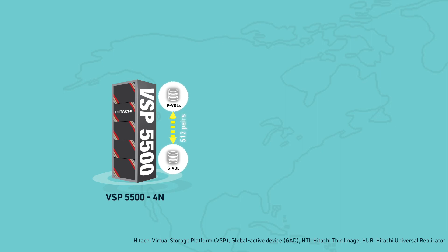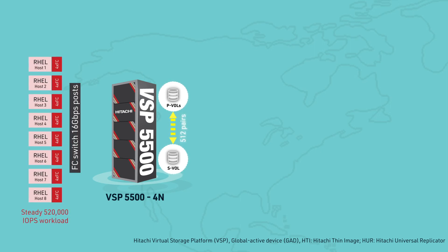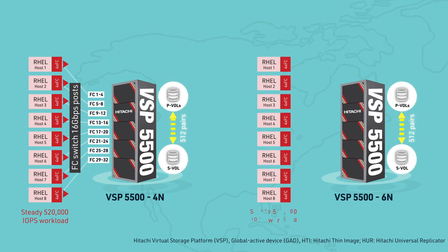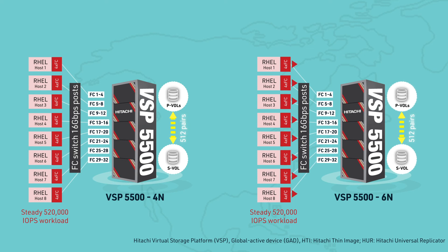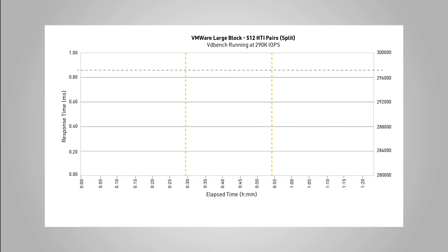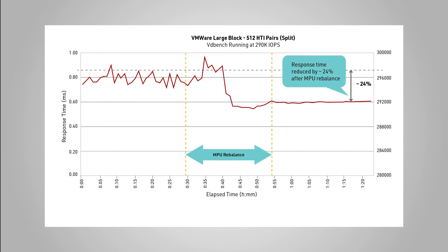To evaluate HTI, we upgraded a four-node VSP5500 model with HTI pairs to a six-node model. These pairs remained in split-state during the procedure. An application workload at a steady I/O rate of 520,000 IOPS was active while the upgrade was taking place. After we completed the scale-out and MPU rebalance, we observed a response time improvement of 24% in the steady-state VMware large block workload.